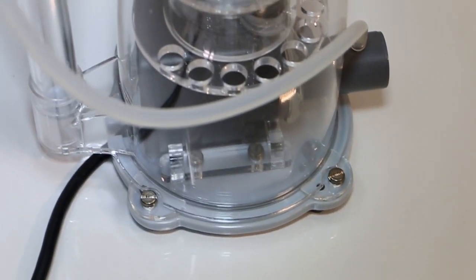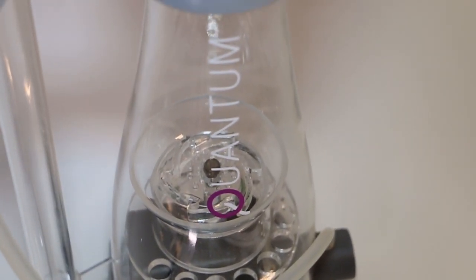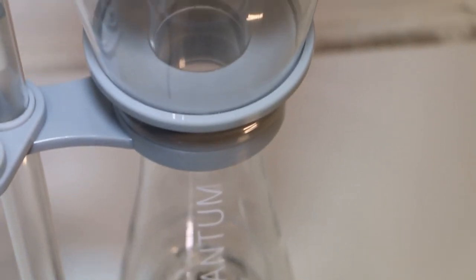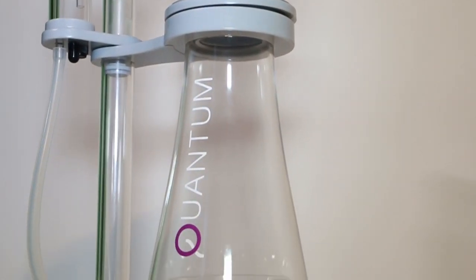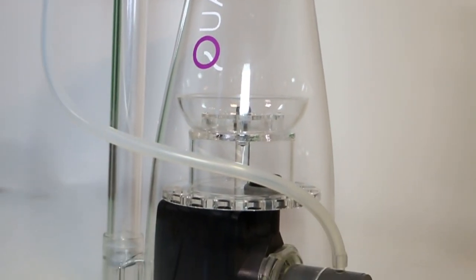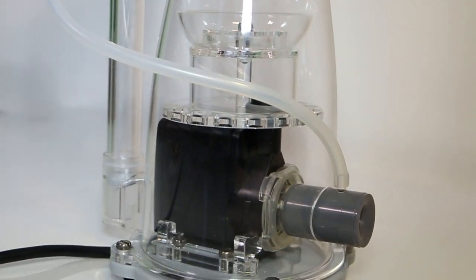The features of the skimmer line continue with the precisely manufactured impeller, the Hybrid Wheel, which is built with super-light materials. Its sawblade-shaped twister gives the bubbles an additional spin, which greatly increases the contact time of the air bubbles in the water column.